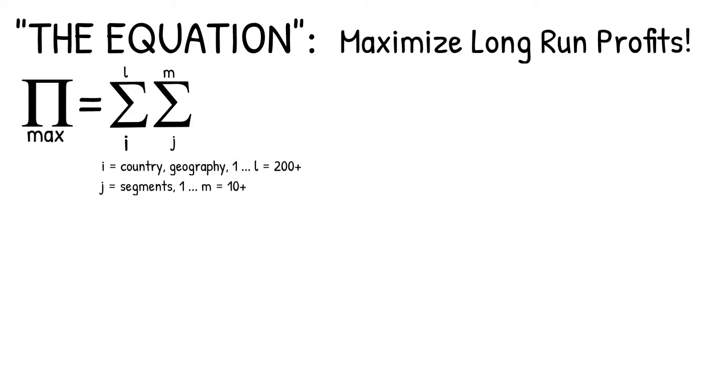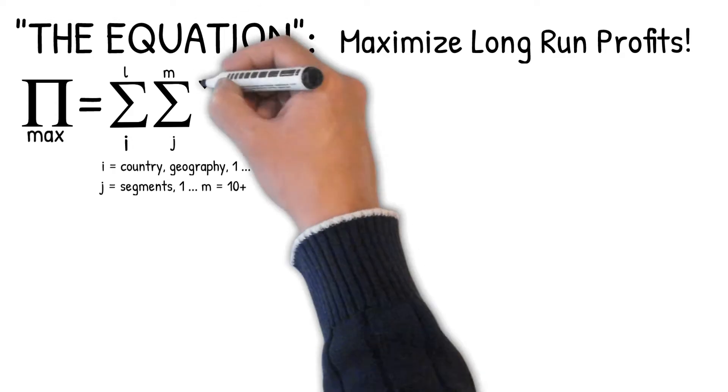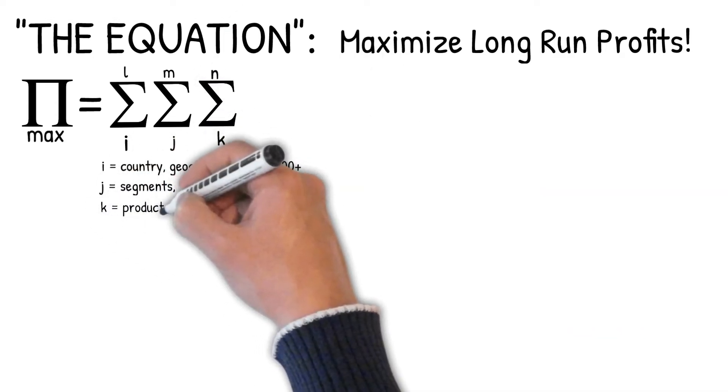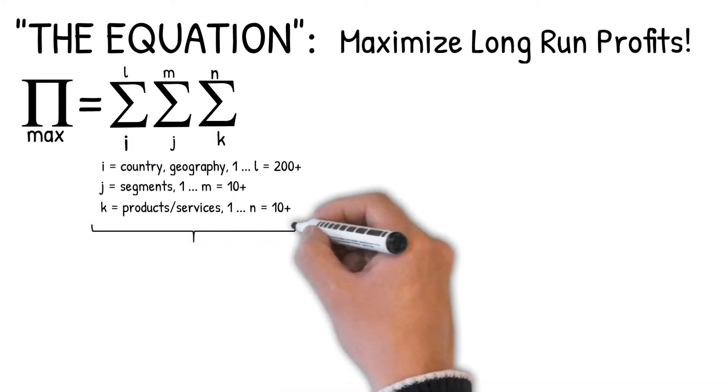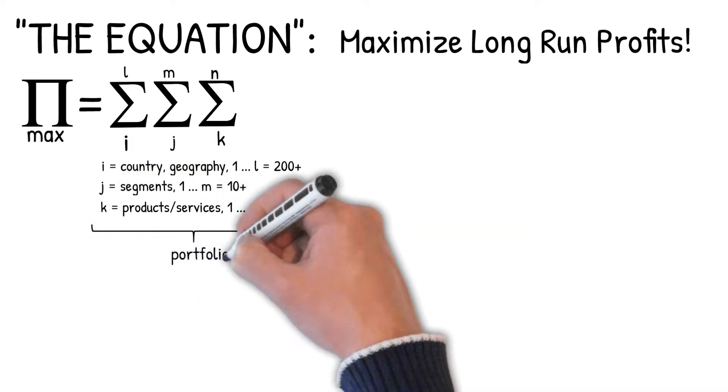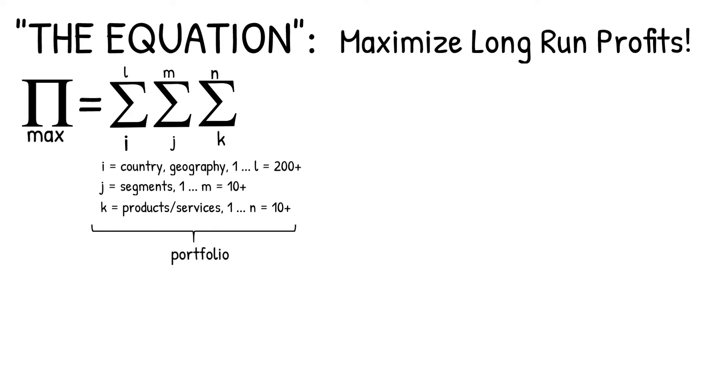After we decided we want to target, let's say, teenagers in China, we have to decide what the products and services and or applications we're going to deploy for that segment in that country. These three sigmas are typically called a product marketer's portfolio.